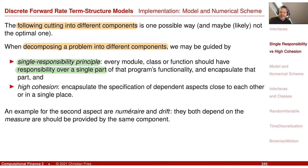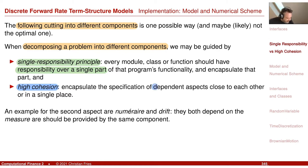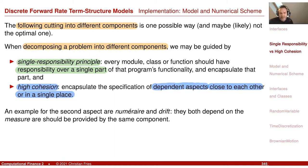On the other hand, there is the so-called cohesion, and I would like to have high cohesion. This means that aspects which have some dependency on each other should be close together or in a single place. An example of this cohesion problem is our numéraire and the drift.